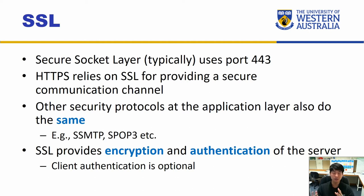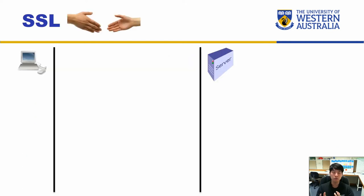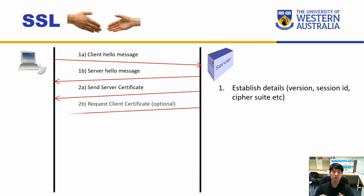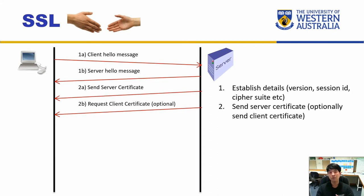What SSL provides — in addition to encryption — is authentication. This authentication can be one-way, either authenticating only the server, or two-way, authenticating both server and client at the same time. To establish SSL we need to do a handshake. First, the client sends its hello message containing a bunch of information to establish the details between the two. In addition to that we need to verify the server, so the server has to send its server certificate.